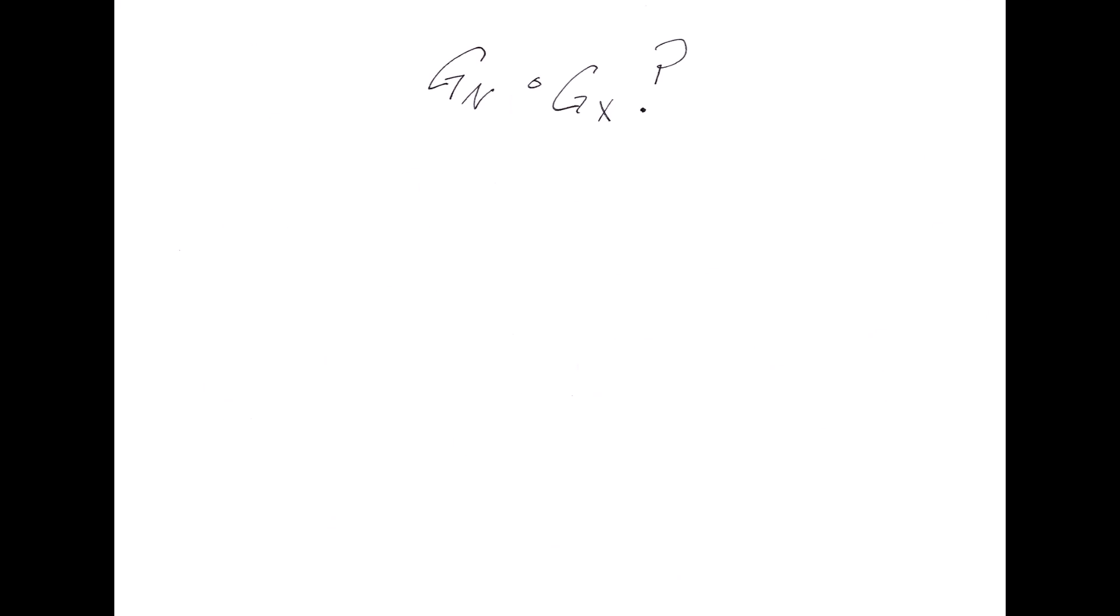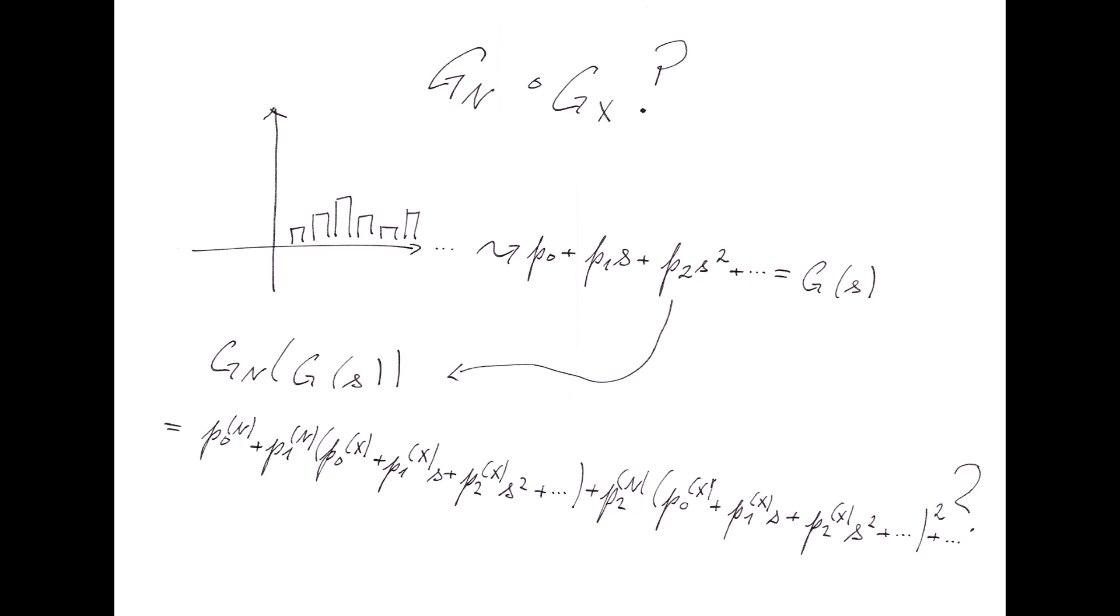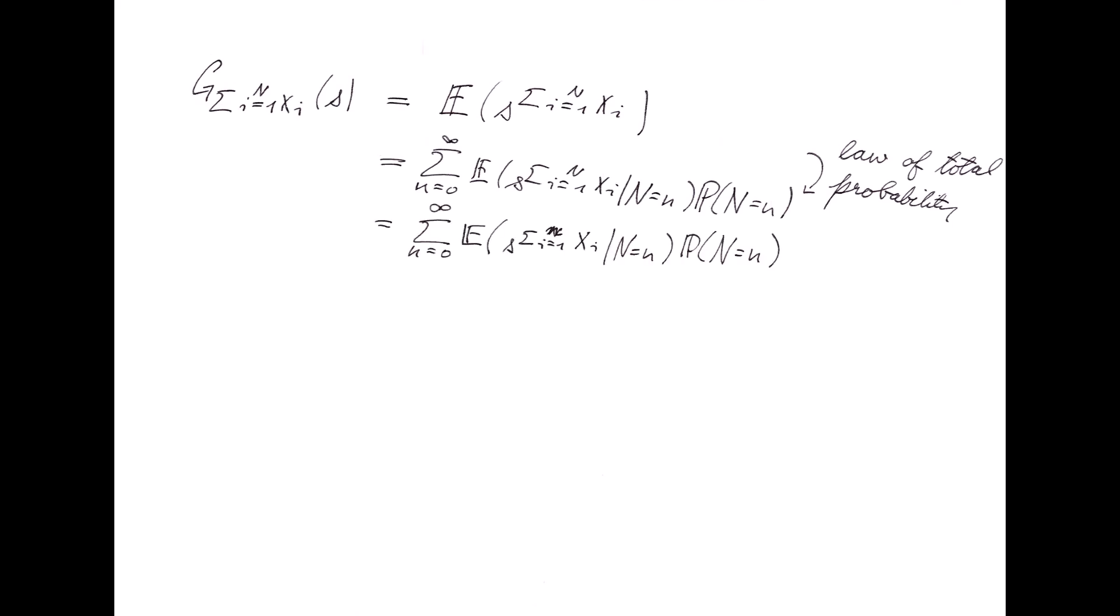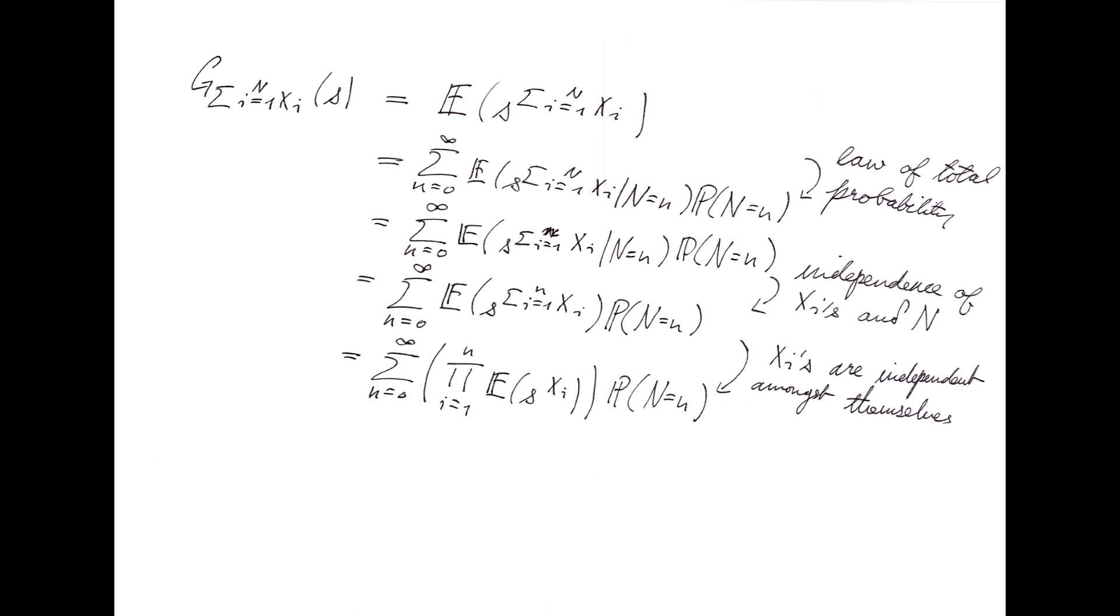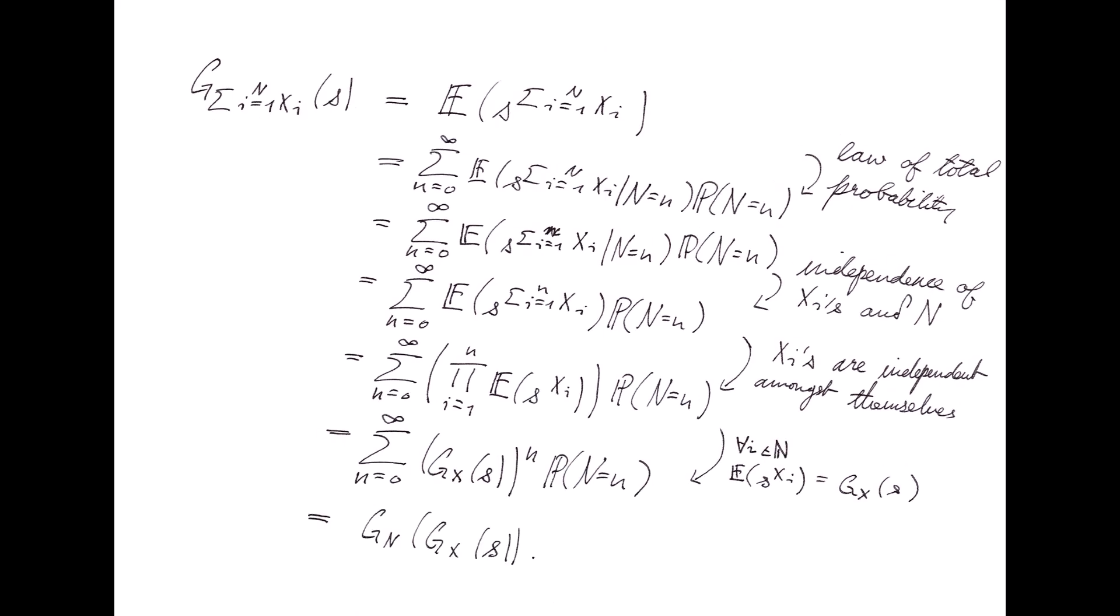Now, I know you may be a bit dazed now. What on earth does it mean to take the composition of two generating functions? I thought we were just encoding these random variables in s, but now we're plugging generating functions within generating functions? Well, hold on, I know I was a bit mystified when I first saw this, but the maths really does check out. Let's have a look at an example of where this kind of stuff is useful, which might ground some of the abstract material we've been covering.